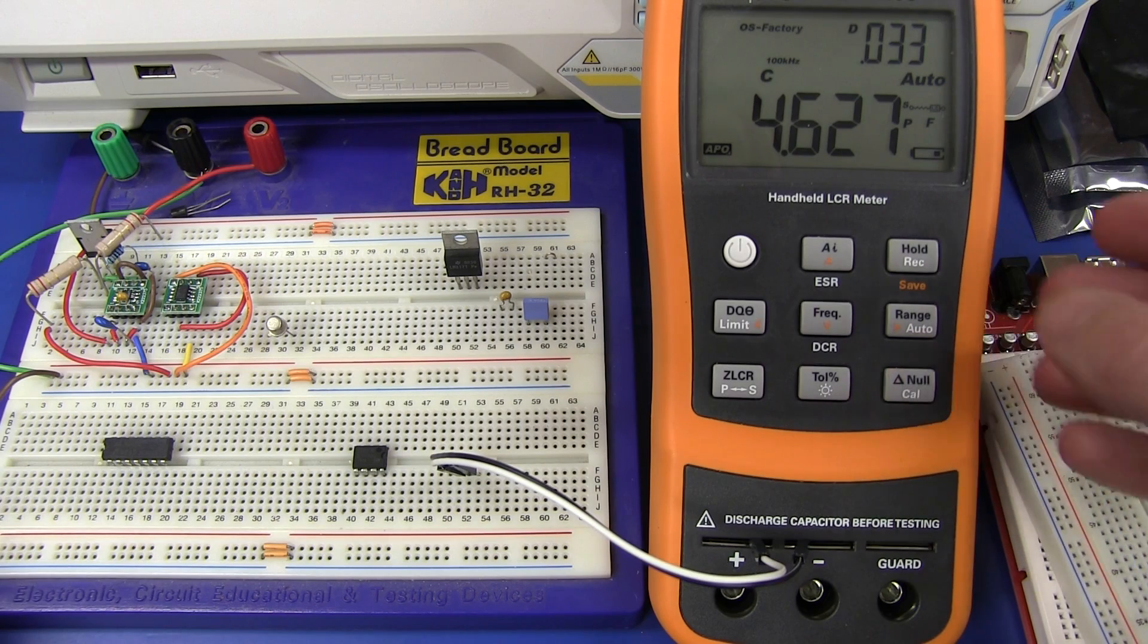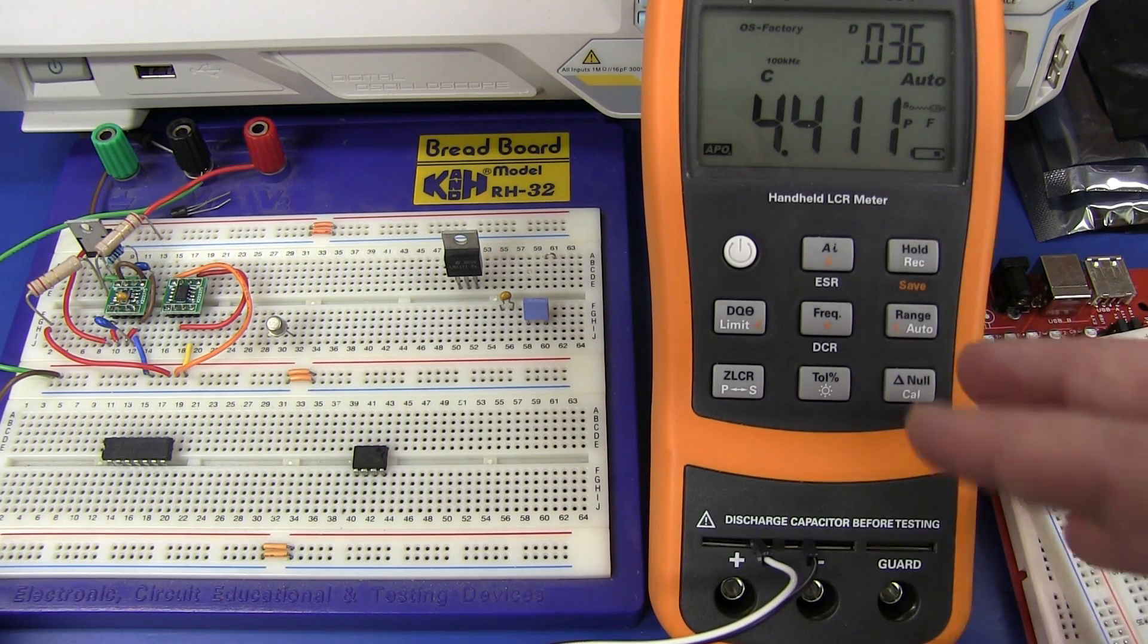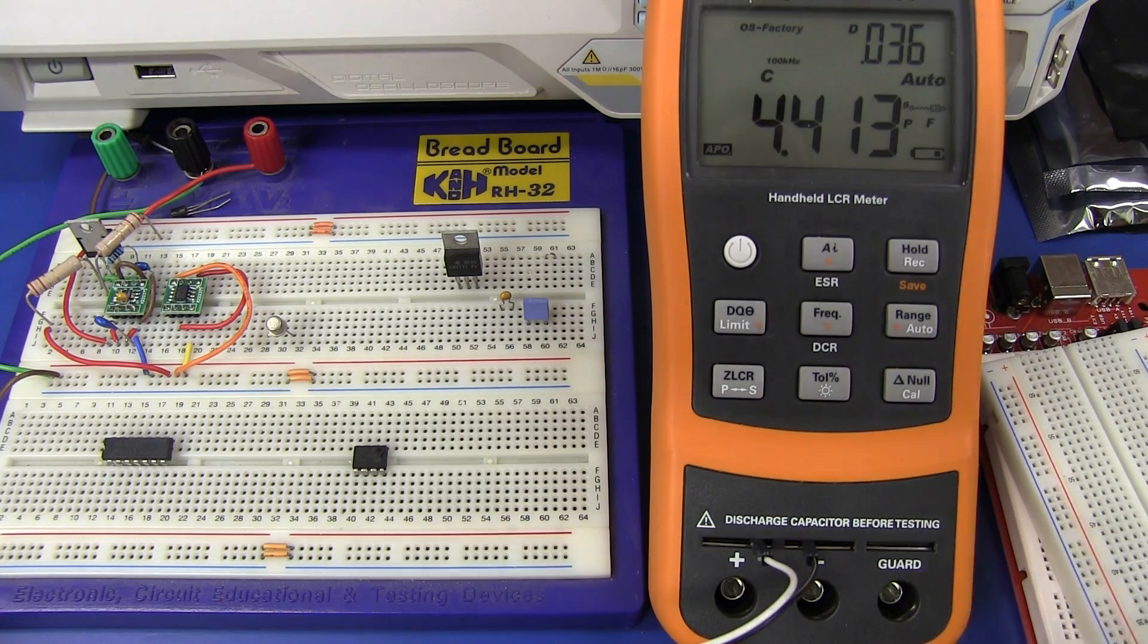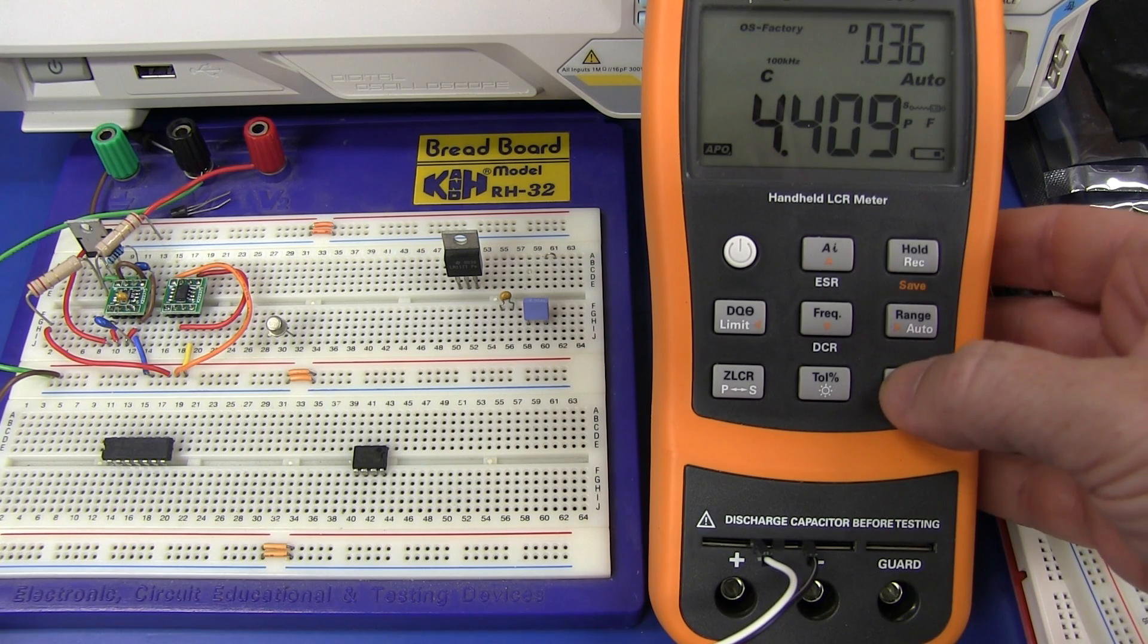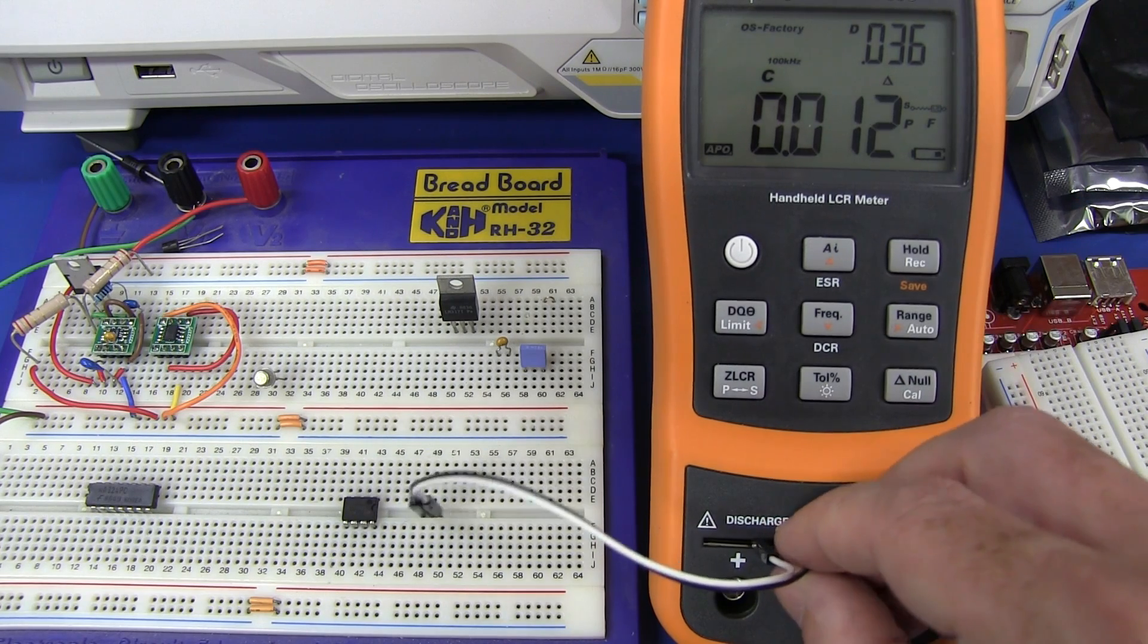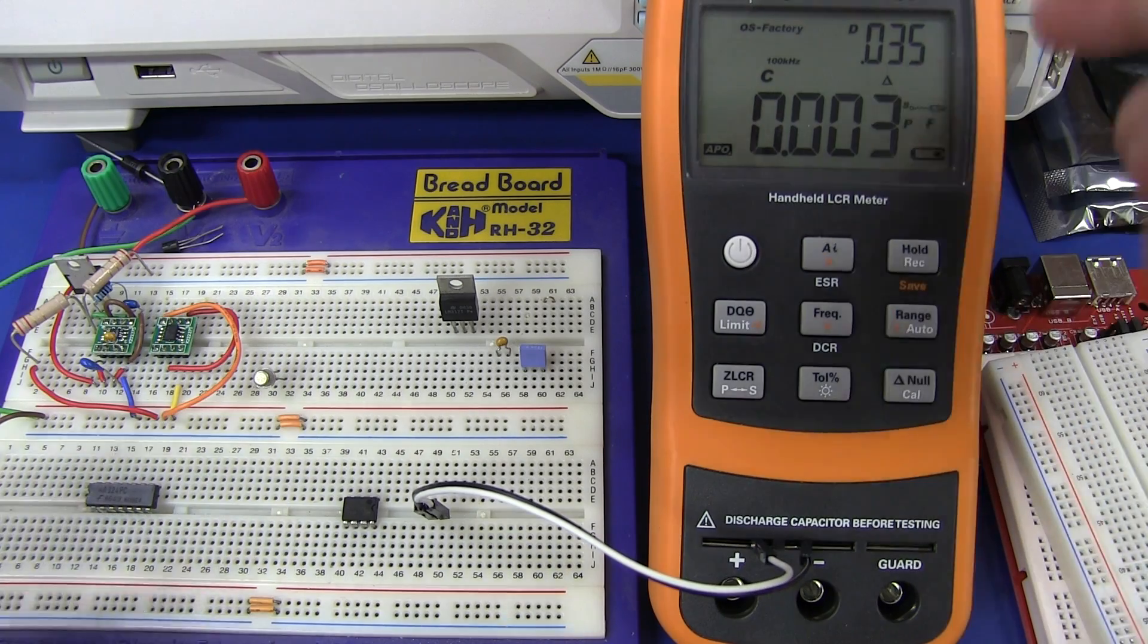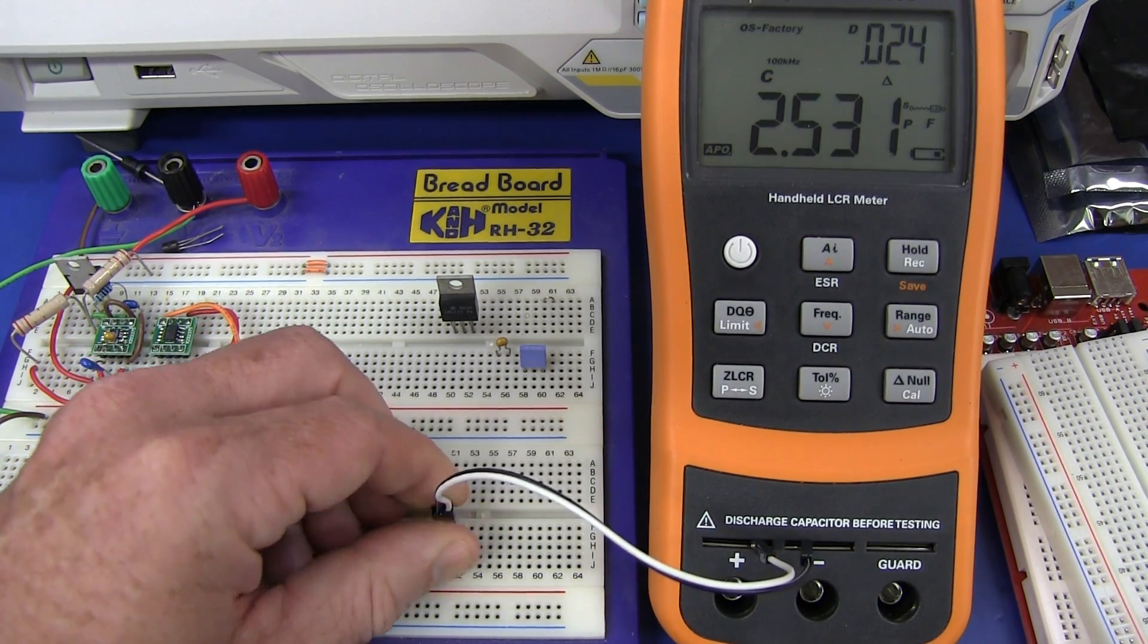But we should be able to null that out. So I've got 4.627 picofarads and that's reasonably repeatable. If I dick around with that, hey, you fart halfway across the room and this thing's going to change at the moment when we're down at one femtofarad. But anyway, alright, so let's null that out and see what we get. That's not too bad. I mean, we can dick around there, but we won't bother. So let's stick that in the breadboard.